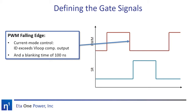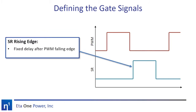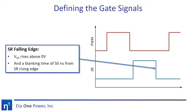We'll also add a blanking time of 100 ns to prevent false tripping during the turn-on of the switch. Next, let's look at the synchronous rectifier gating signal. We'll turn on the synchronous rectifier a short delay after the falling edge of the main PWM. We'll then turn off the synchronous rectifier when the voltage across the synchronous rectifier transistor rises above zero volts, indicating that the current has reversed. We'll add a 50 ns delay, or blanking time, to ensure that the synchronous rectifier does not turn off too early.